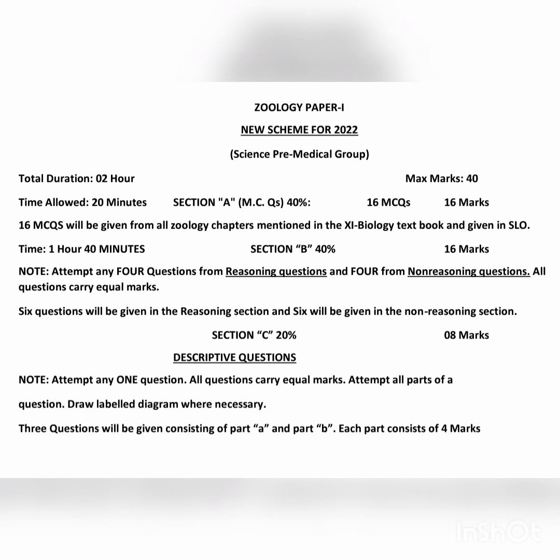After that you have descriptive questions worth eight marks. You have to attempt Part A and Part B, each part having four marks. So in Zoology Part 1 you have 40 marks total: 16 marks for MCQs, 16 marks for Section B, and eight marks for Section C.